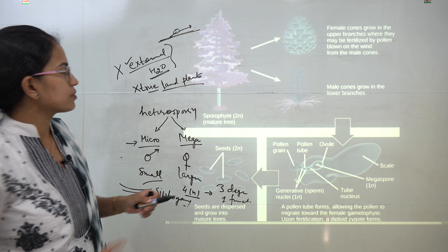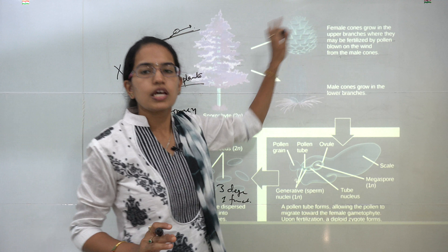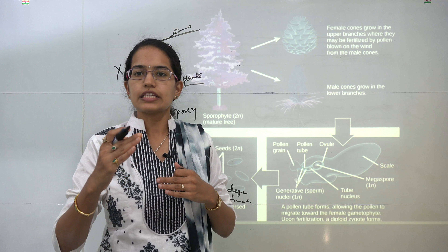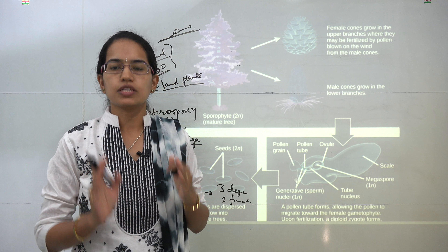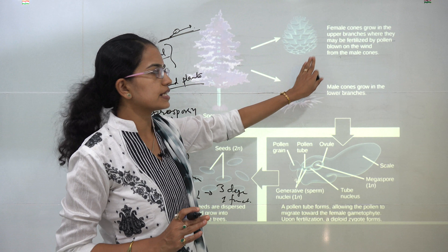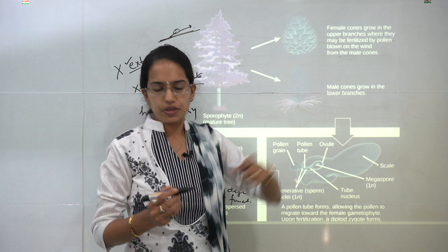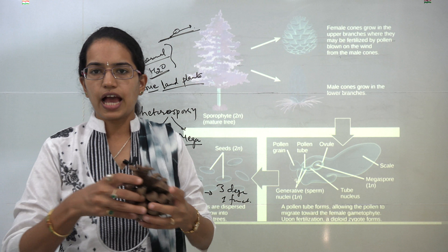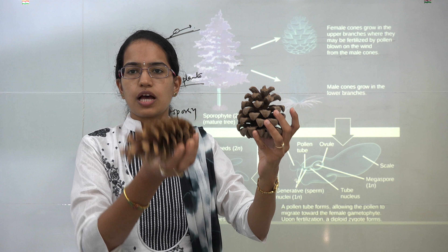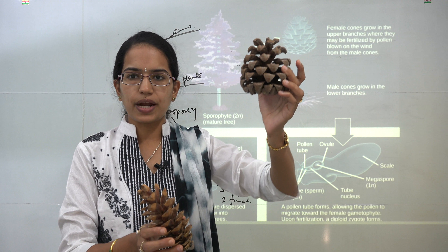If you look at this diagram closely, you have a sporophyte with male cones and female cones. This is a classic example of a conifer. Under gymnosperms we classify species into four categories, one of which is coniferopsida — the conifers — and here we are explaining that with the help of conifers. The male cones appear on the lower branches, while female cones, which are bigger in size, appear on the top branches.